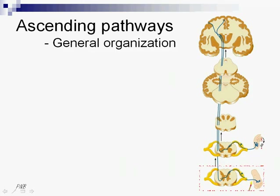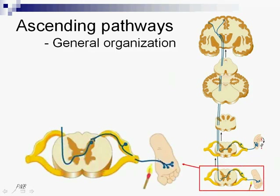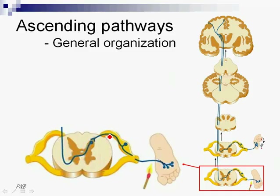There are three neurons in this system, generally. The first one is situated in the dorsal root ganglion. It introduces itself into the spinal cord where the second neuron is situated. It can actually be situated anywhere within the spinal cord or up to the medulla oblongata. This first synapse will always occur on the homolateral side to where the fibers are introducing themselves into the spinal cord — that is, on the same side.